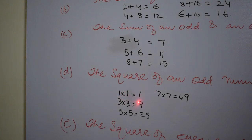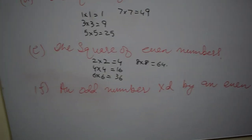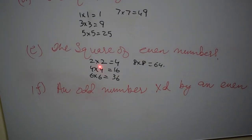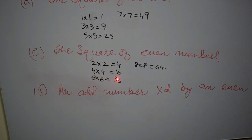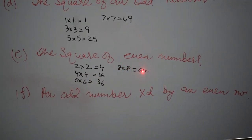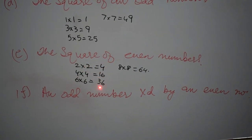Just a few examples. 1 multiplied by 1 is 1. 3 multiplied by 3 is 9. 5 multiplied by 5 is 25. 7 multiplied by 7 is 49. That means the outcome will always be an odd number. Now we will come to the next part, which is the square of even numbers. Well dear students, you can see I have written square of even numbers. 2 multiplied by 2 is 4. 4 multiplied by 4 is 16. 6 multiplied by 6 is 36. 8 multiplied by 8 is 64. So the outcome of squaring even numbers is always an even number.